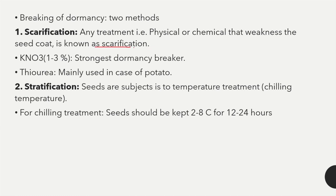In some conditions, due to a hard seed coat, seeds remain dormant. To weaken the seed coat we use scarification using KNO₃ and thiourea. Thiourea is mainly used in the case of potato. The second method is stratification — seeds are subjected to temperature or chilling treatment at 2 to 8 degrees Celsius for 12 to 24 hours.